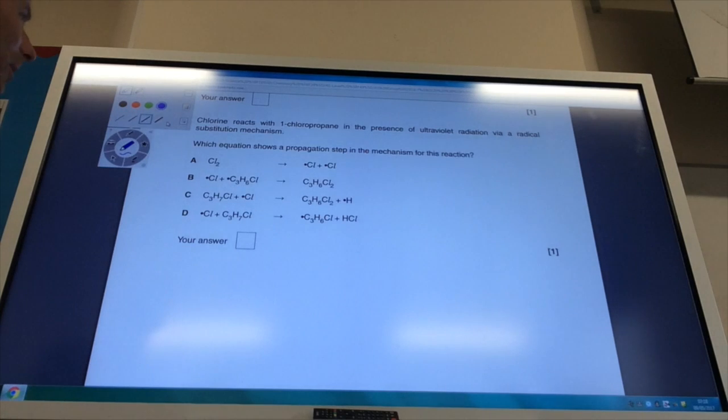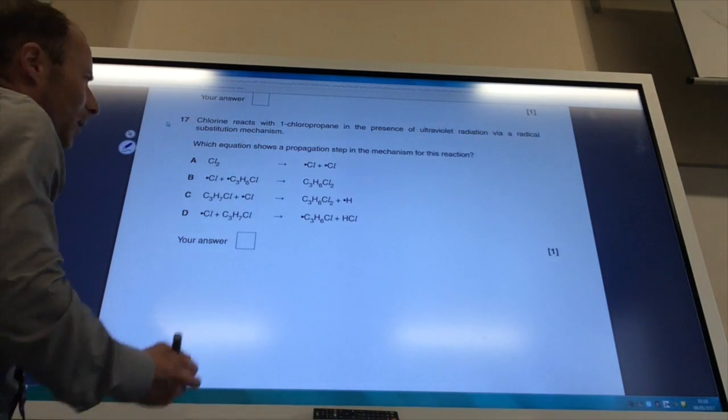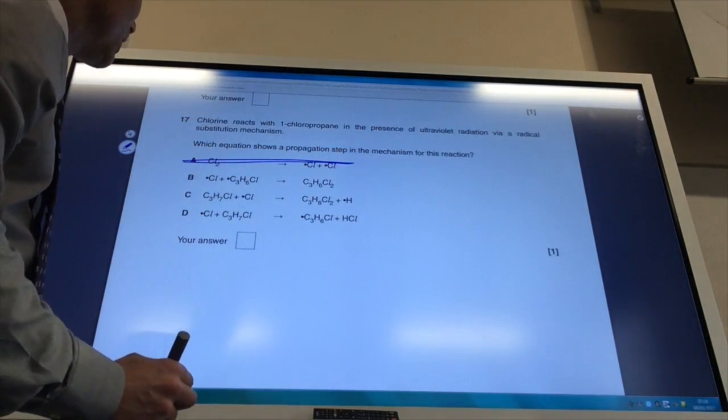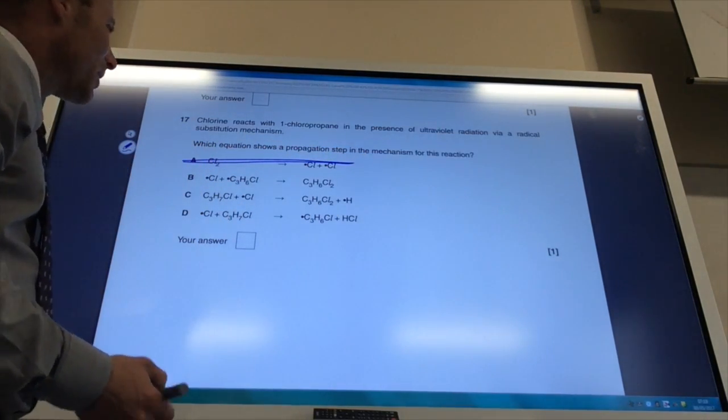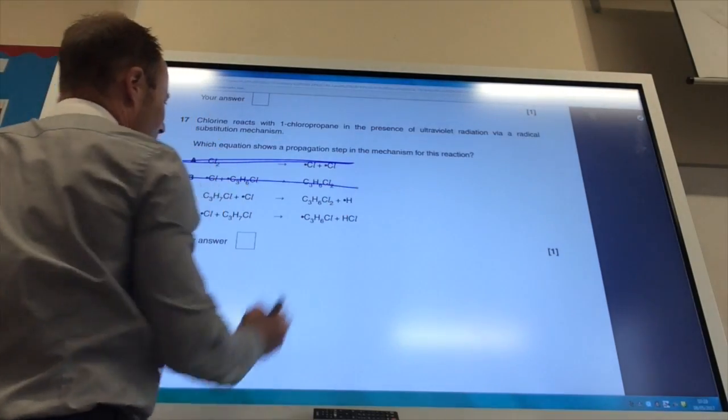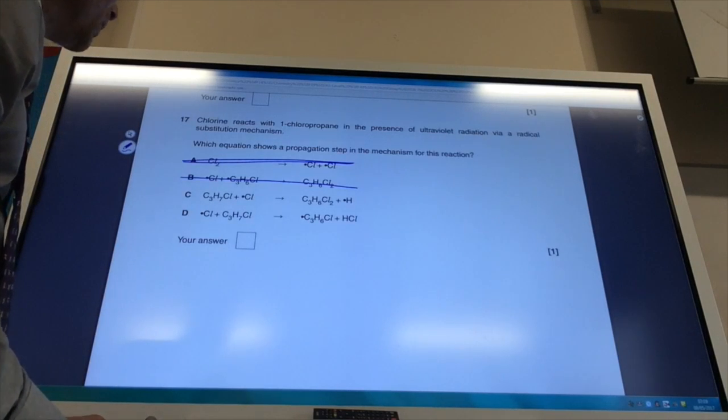Free radical substitution now. They want me to find a propagation step. Well, it's not that one because that is initiation—I'm making two radicals. For propagation, I must make a free radical at the end. So it can't be that one. It's looking like it is either C or D.